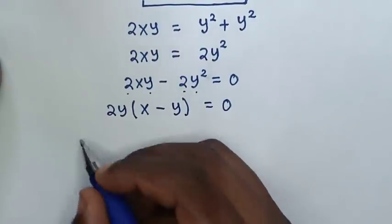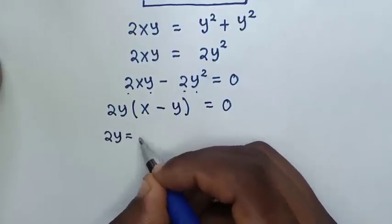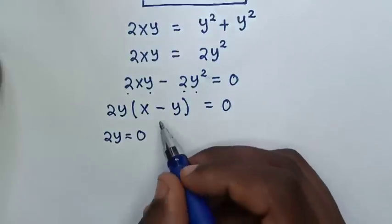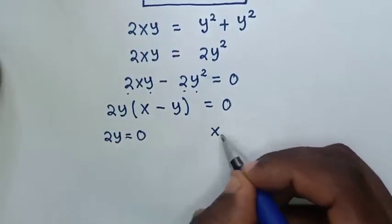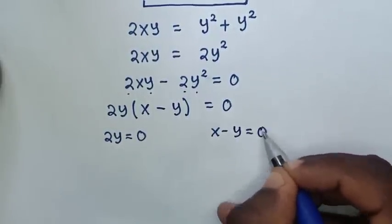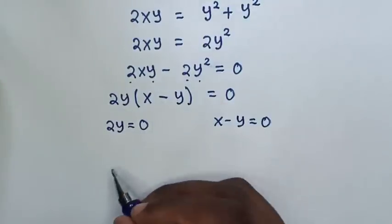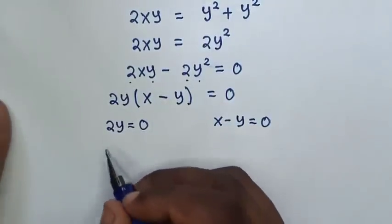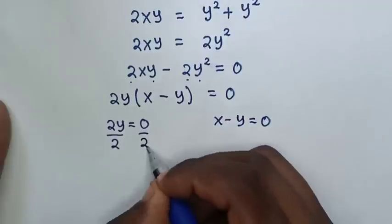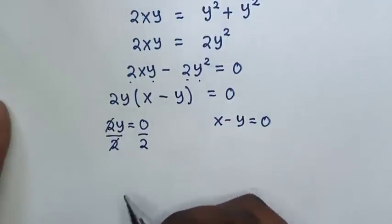Here we have two solutions: 2y is equal to 0, and another solution is x minus y is equal to 0. To solve from the first solution, we divide by 2 on both sides, so the 2s cancel.